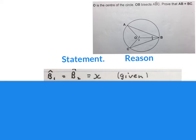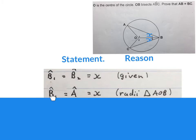First we're going to prepare our information to use in congruency later. We write angle B1 is equal to angle B2 and call it X — give it a variable — and that is given, since OB bisects that angle. Then we can write angle B1 is equal to angle A is equal to X. Because of radii — in triangle AOB those two lines are radii, making them equal in length, which then makes that angle also X. Angles opposite equal radii.